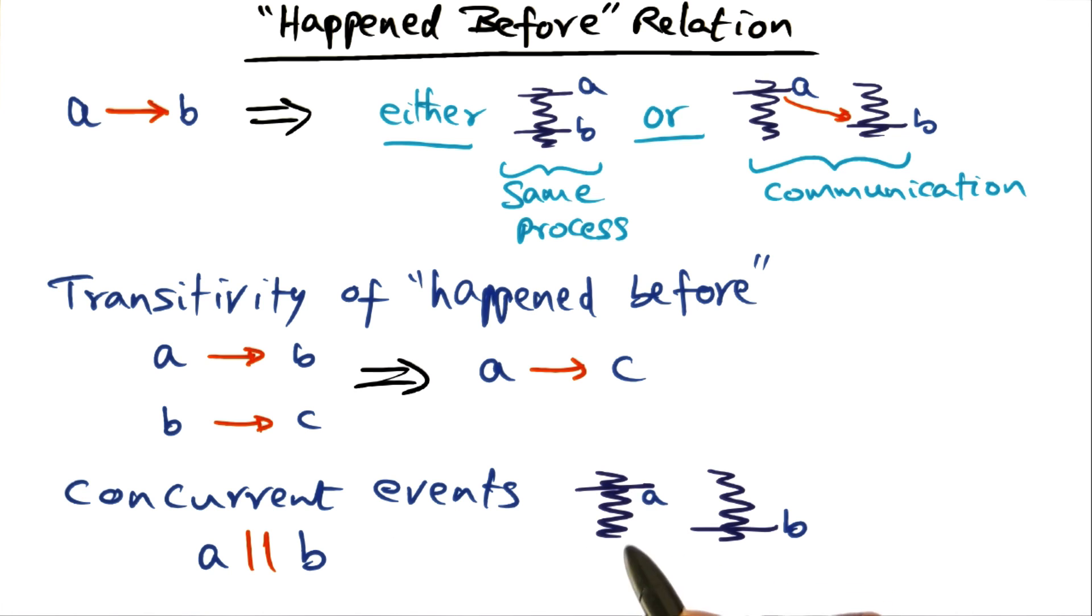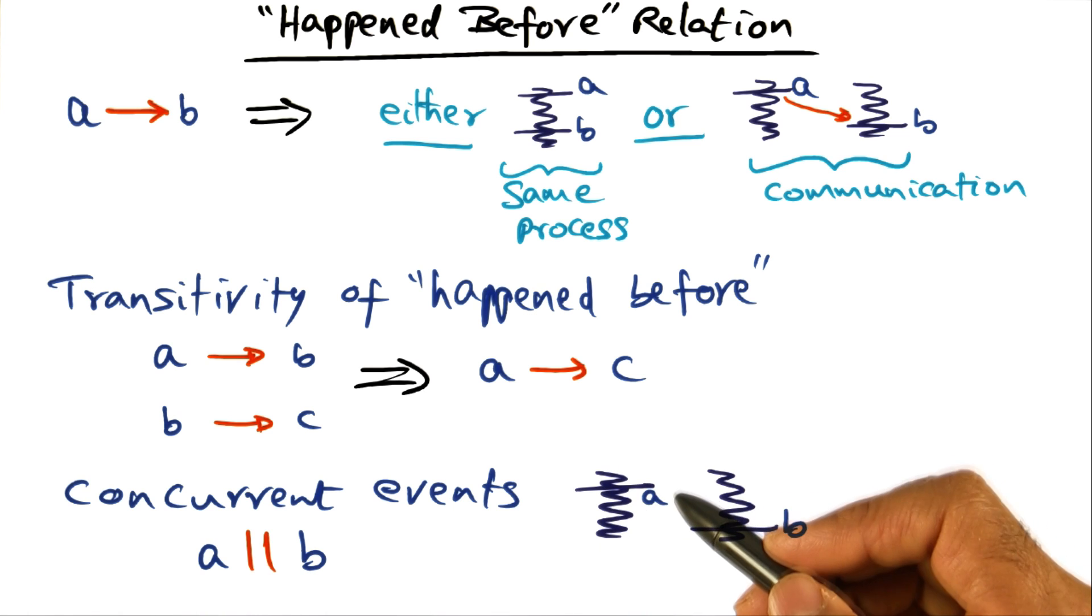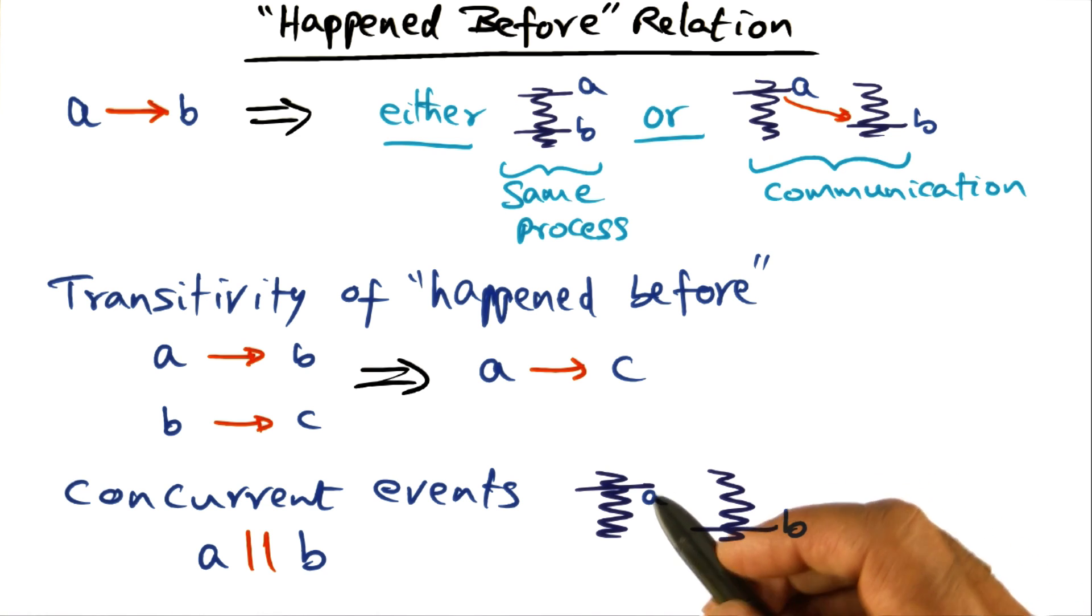So for instance, I'm showing you two nodes of the distributed system. A is an event on one node, and B is an event on another node. And you can see that since A and B are not events on the same node, we cannot apply the sequential process condition to say that there is an ordering between A and B.